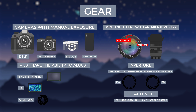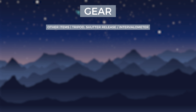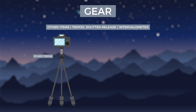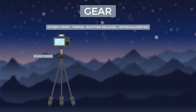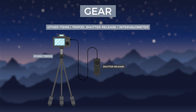Besides a camera and lens, a sturdy tripod is absolutely essential to minimize camera shake. Even pressing the shutter button can cause internal vibrations throughout the camera, so having a shutter release cable will eliminate this worry. If you want to record time-lapse, buy a shutter release with an intervalometer function.